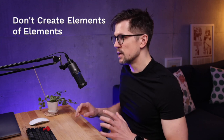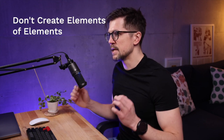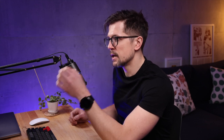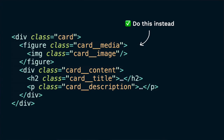Another common mistake: creating elements of elements. You might look at the card markup and think — since the image is inside the media element, just keep using the double underscore pattern. That might be some CSS methodology, but it's not BEM. Instead, keep just one level of elements regardless of how deeply they are nested in the HTML.